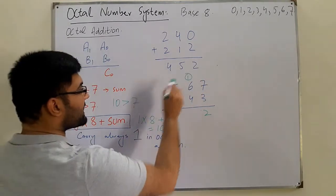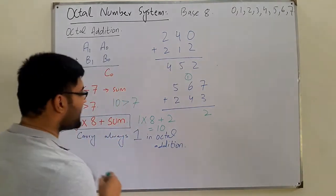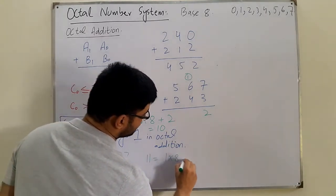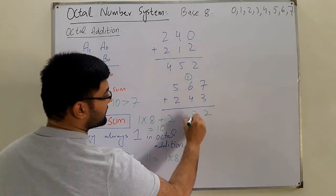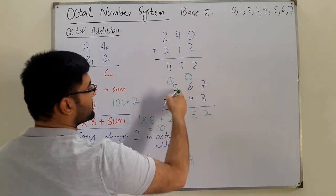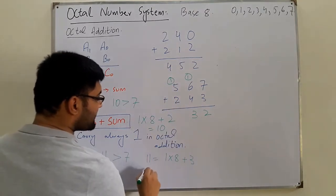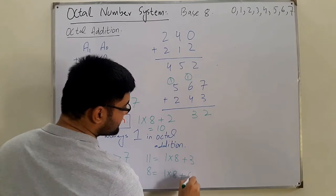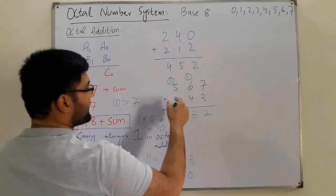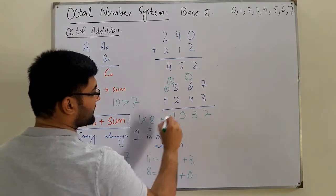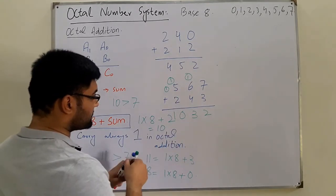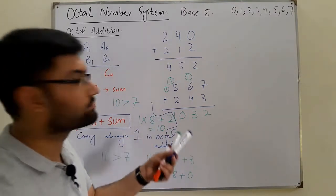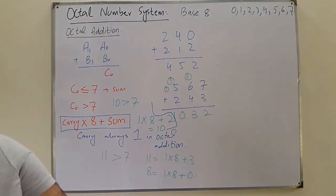Next, 6 plus 4 is 10, plus 1 carry is 11. Since 11 is greater than 7: 1 × 8 + 3, so 3 is the sum and 1 is the carry. Then 5 plus 2 is 7, plus 1 carry is 8, which is again greater than 7: 1 × 8 + 0, so 0 is the sum and 1 is the carry. The final answer is 1032.